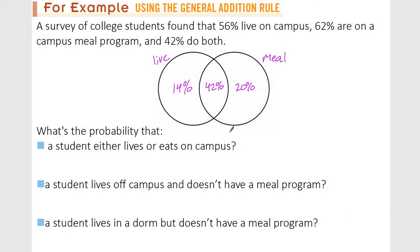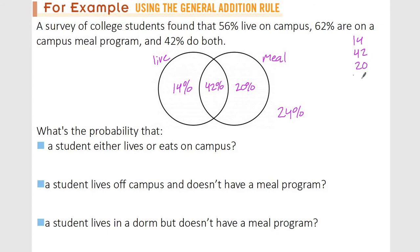But first you should notice something — these probabilities don't add up to 100%. So where does the other percentage go? Hopefully you know it goes outside of the box where neither of these things occur. So what is that? 14 plus 42 is 56, plus 20 is 76. So 76% is inside the circles, which means 24% is outside, because all of these have to add up to 100%. So 14, 42, 20, 24 should all add up to 100%.